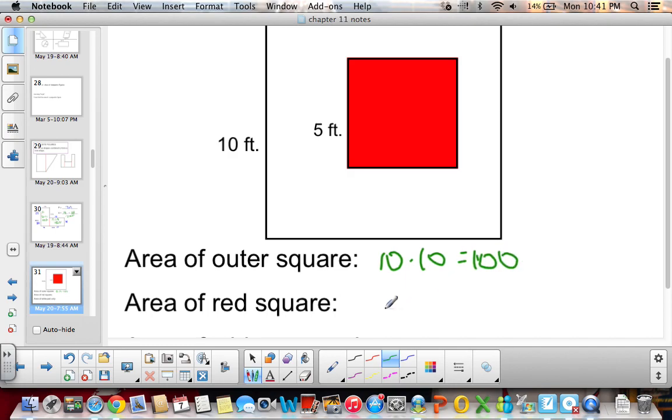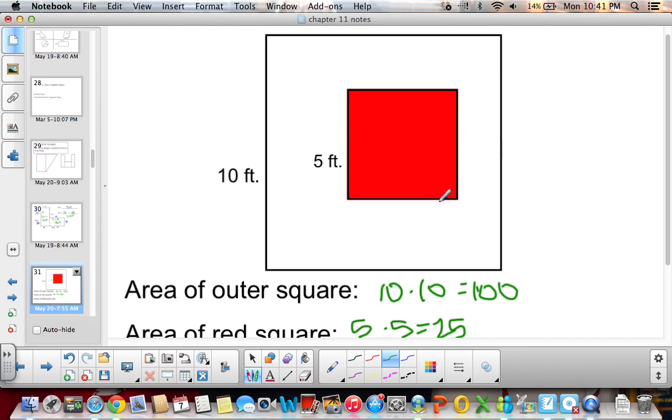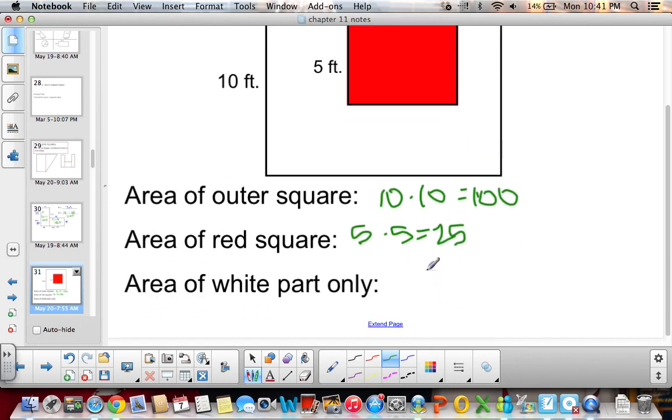And then the area of the red square is 5 times 5, and I get 25. But instead of adding them together, because I want to take out this part, I'm going to take 100 minus 25, and I get 75. So the area of just the white part alone is 75 feet squared.